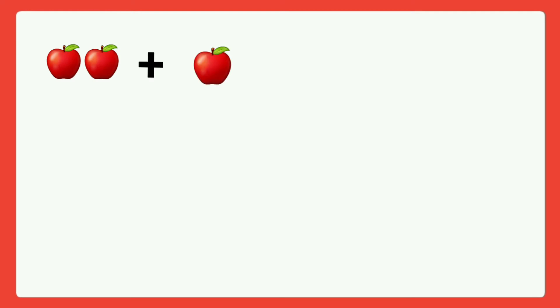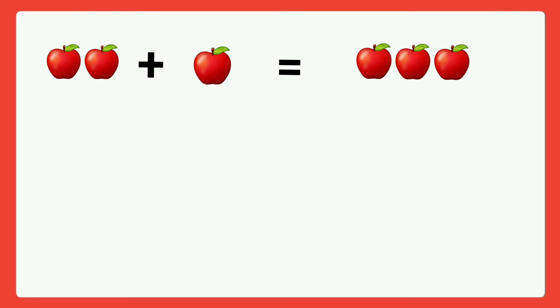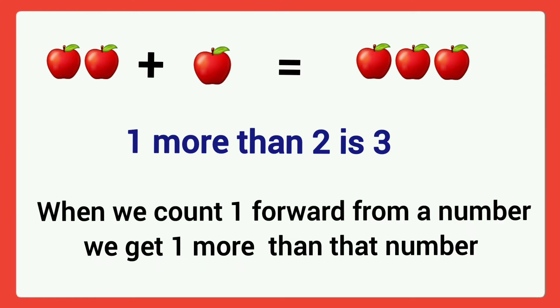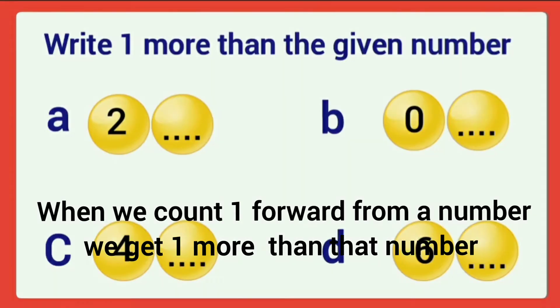Next, one more than. Here two apples. We add one more apple. Then how many apples are there? Three. Total number of apples are three. That is one more than two is three. When we count one forward from a number, we get one more than that number. Here one more than two is three.